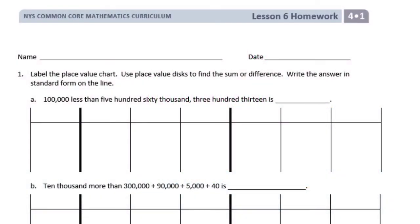Grade 4, Module 1, Lesson 6 Homework. Number 1: Label the place value chart. Use place value disks to find the sum or difference. Write the answer in standard form on the line.